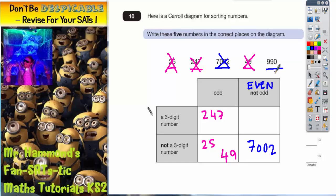990, is it got three digits? Yes, it has. So three digit number, that's this row and it's even. So 990 goes in there. Nice bit of clear thinking and you'll get the marks on that question. Thank you.